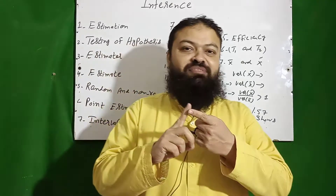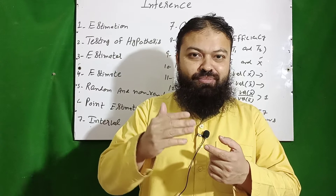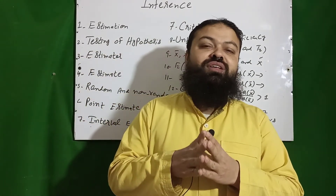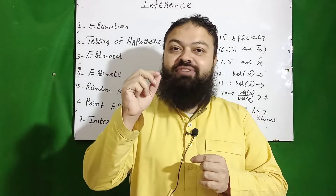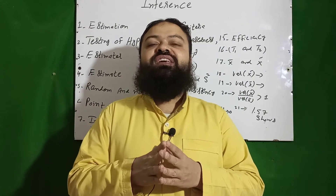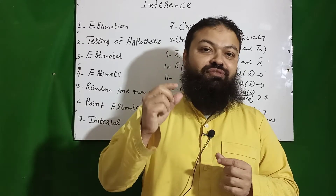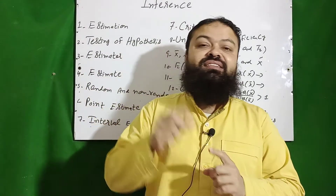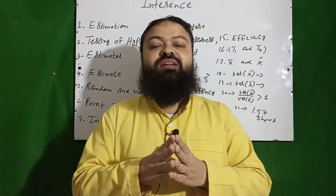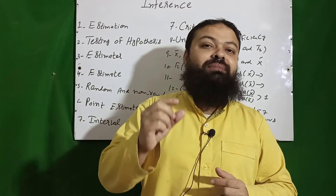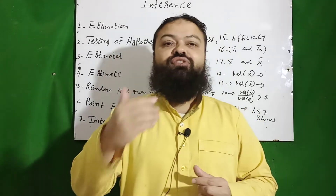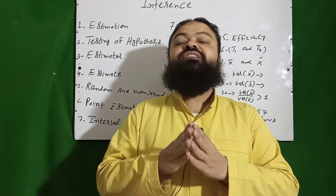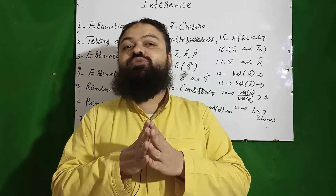Estimation has two types: point estimate and interval estimate. Before elaborating these, I will explain the difference between estimator and estimate. An estimator is the formula used to find the estimate — for example, x-bar = Σx/n is an estimator; it is a function of a random variable, so it is random. An estimate is a single numerical value calculated from the sample for estimating the unknown population parameter; it is non-random.